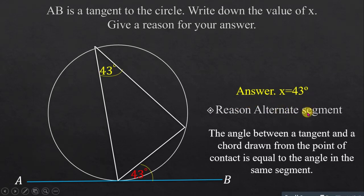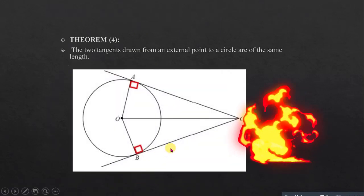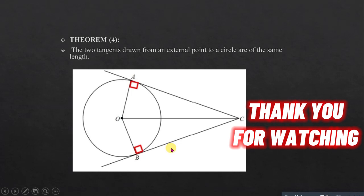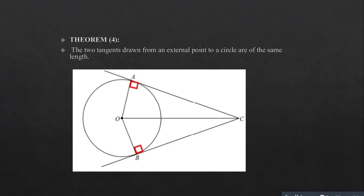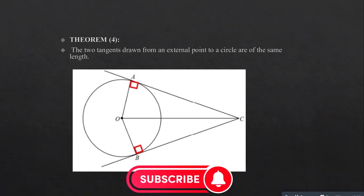From the property, the angle formed by the tangent equals the angle x in the alternate segment. Since the given angle is 43 degrees, x is also 43 degrees — because they are in the alternate segment. This is the alternate segment theorem: the angle between a tangent and chord drawn from the point of contact equals the angle in the same (alternate) segment. Thank you for watching; please subscribe, like, and hit the notification bell.